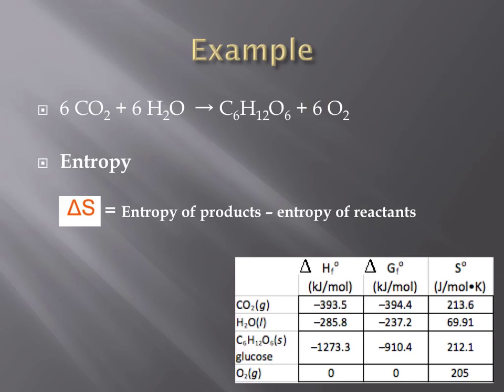The last value that would need to be calculated is entropy. Entropy is calculated the exact same way as enthalpy, just using a different column from the chart that's provided here. Again, the entropy of the reactants needs to be subtracted from the entropy of the products.